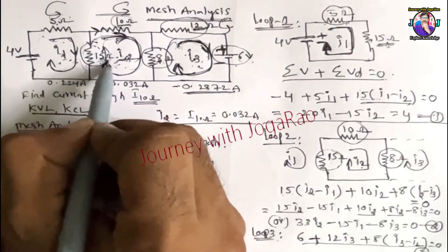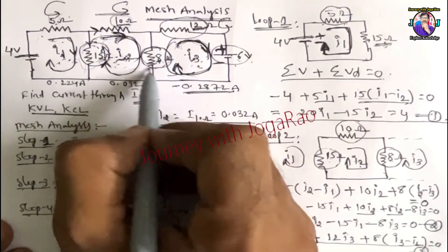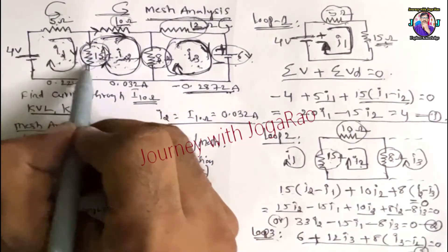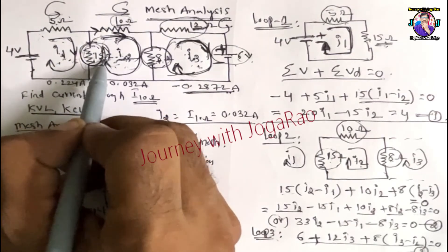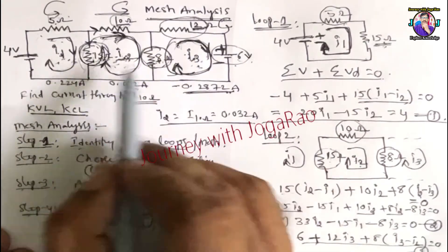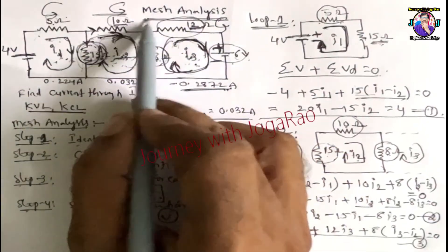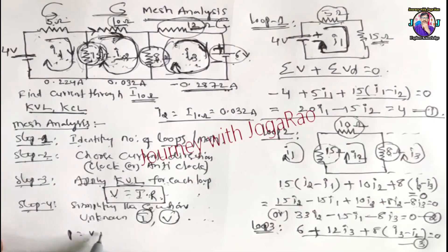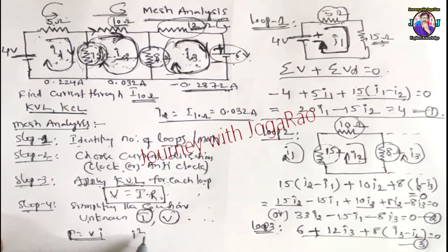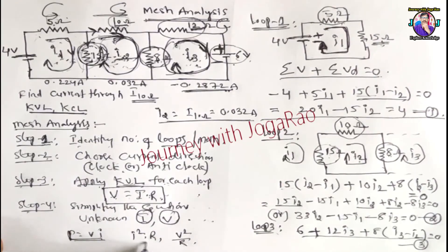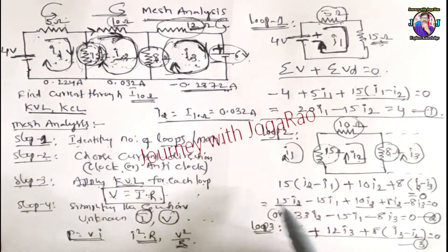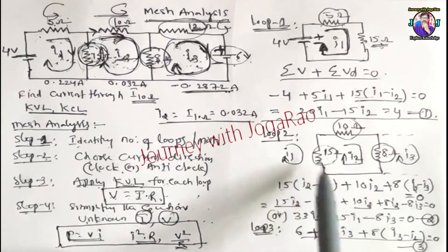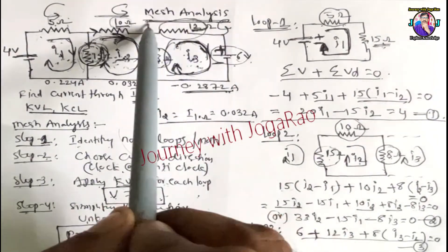The current through 15 ohms is I1 − I2, and the current through 8 ohms is I2 − I3. Voltage drop equals current × resistance. Power can be calculated as V × I, I² × R, or V²/R. Using mesh analysis we can calculate unknown current, unknown voltage, and power in any circuit element.